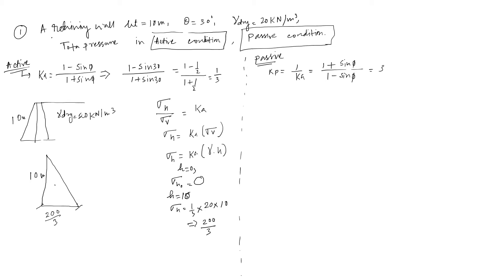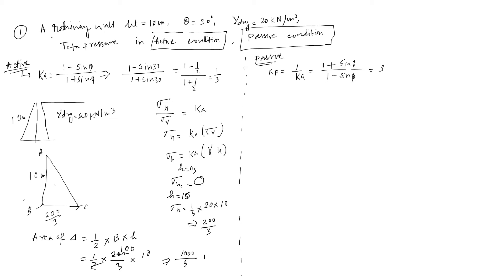The pressure diagram forms a triangle — figure ABC — with the base value of 200/3 kN/m² and height of 10 meters. The total active pressure equals the area of the triangle: half times base times height equals half times (200/3) times 10, giving a total active pressure of 1000/3 kN per meter.